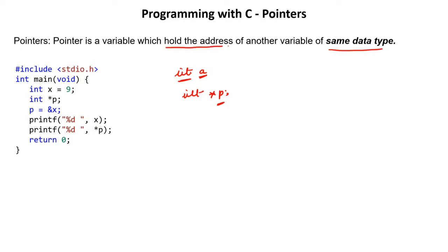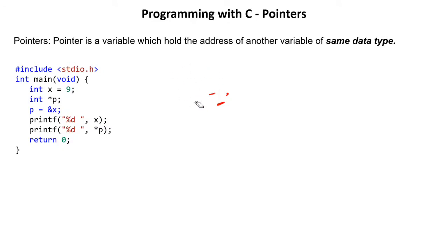Pointer holds the address of another variable. So if 'a' is of integer type and 'p' is a pointer of integer type, then p will hold the address of a. But there is a condition: if the pointer is of integer type, it will hold the address of a variable which is also of integer type. This is a constraint you must notice, otherwise you will get absurd results.